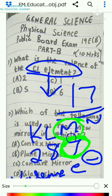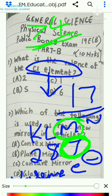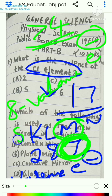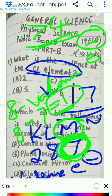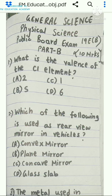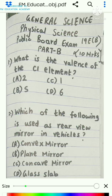Whenever the valence electrons are more than 4, the formula to calculate valency is 8 minus valence electrons. Here the valence electrons are 7, so 8 minus 7 equals 1. Therefore, the valence of chlorine is 1. The answer is option B, which is 1.